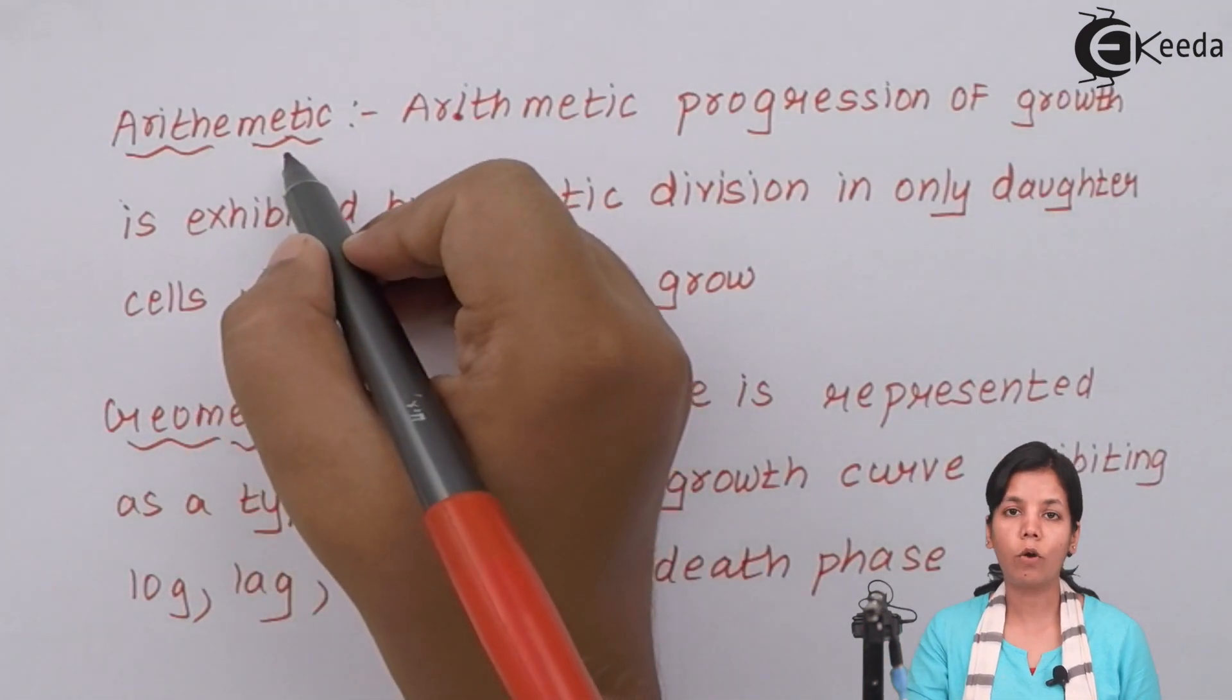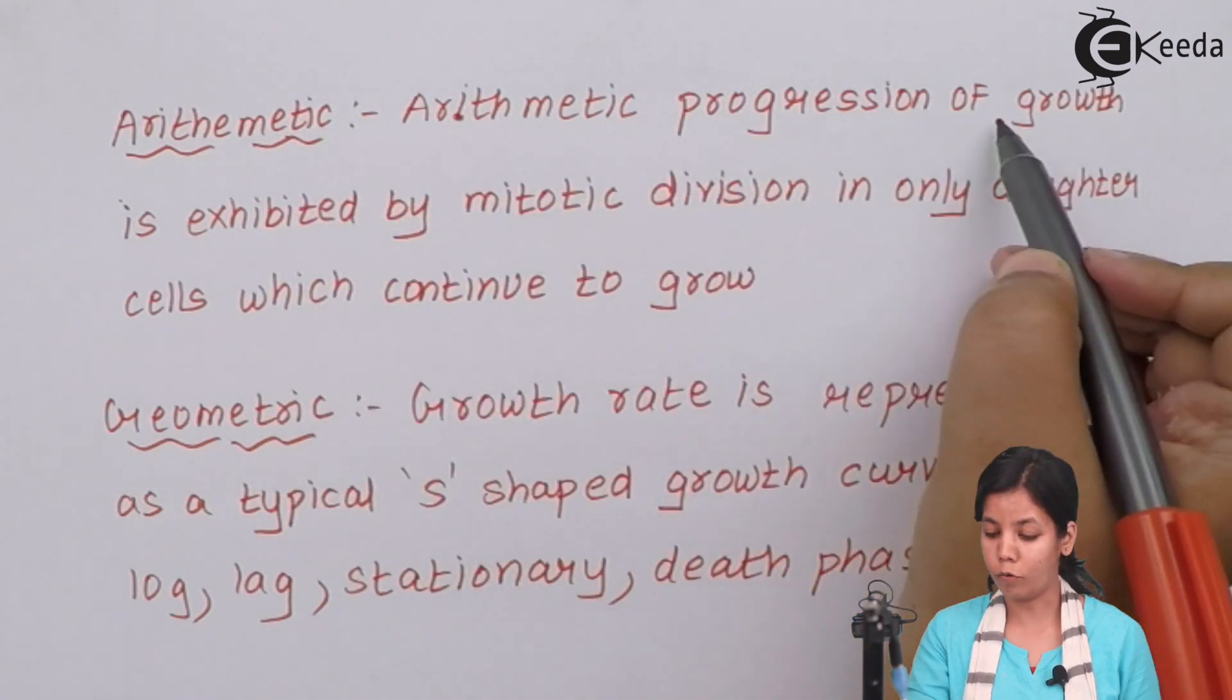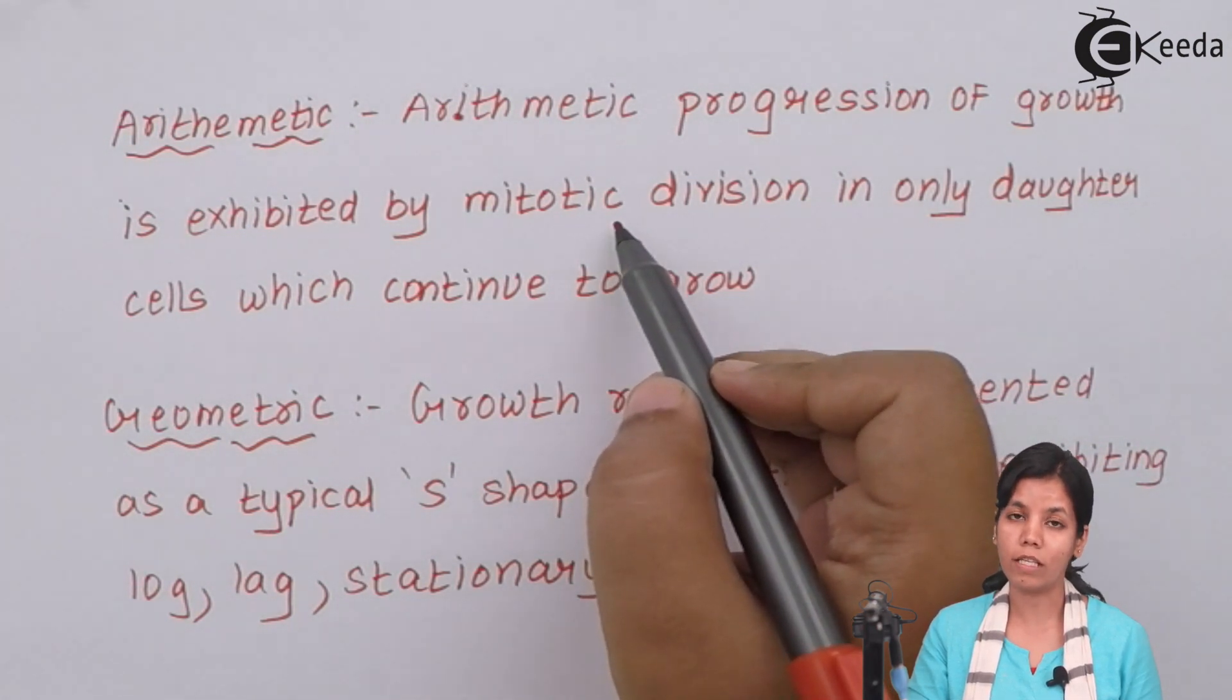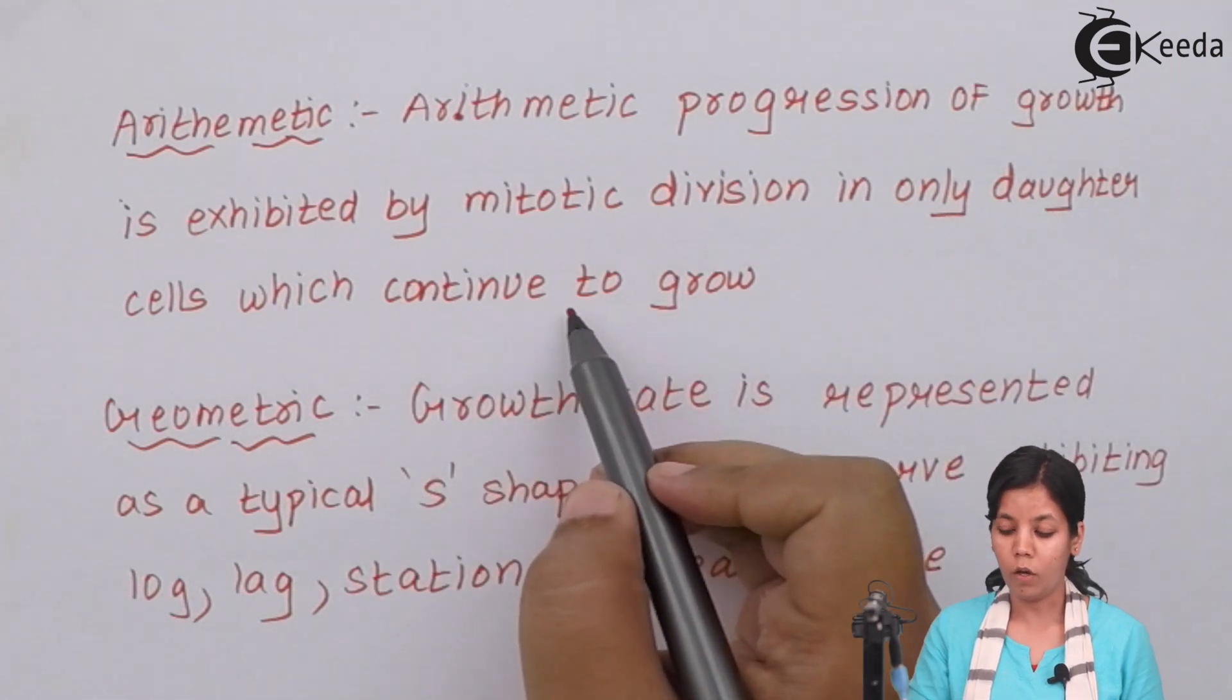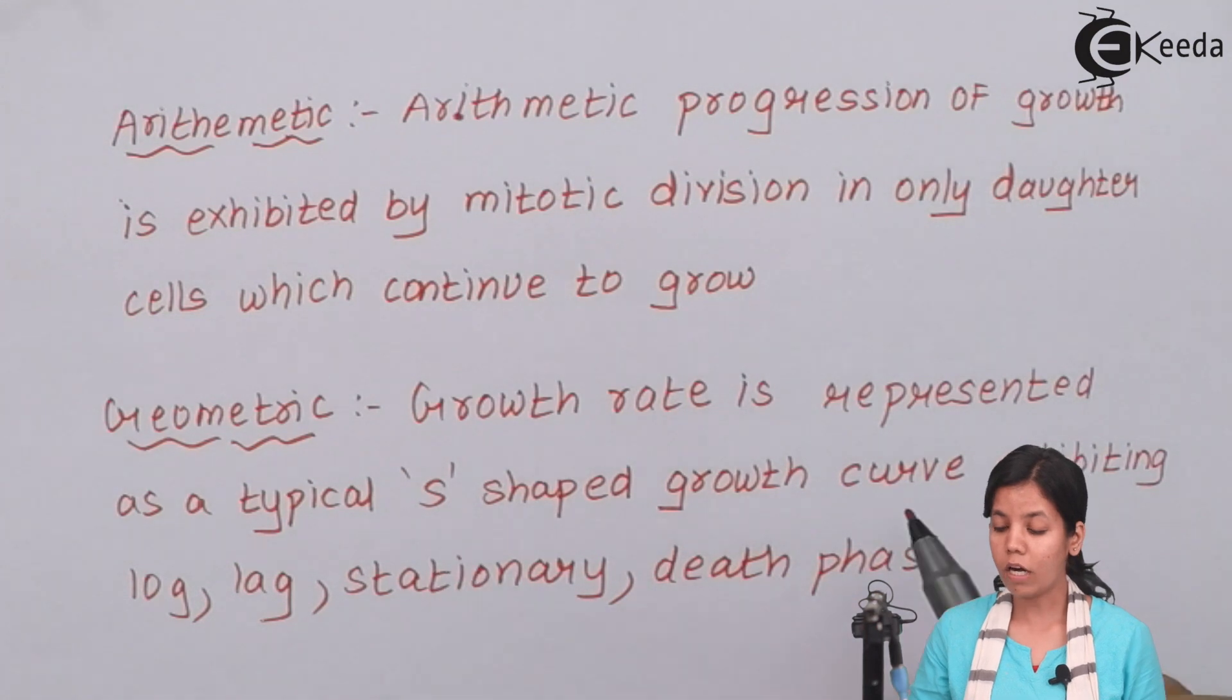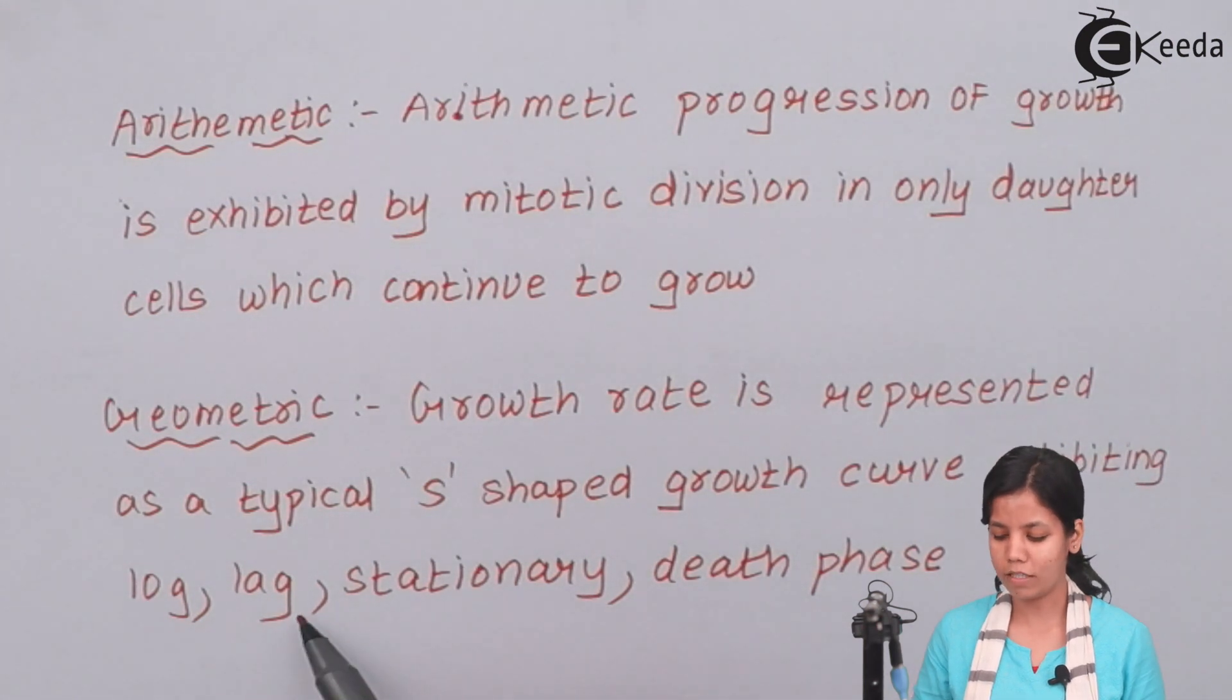The two phases of growth rate are: arithmetic progression of growth is exhibited by mitotic division or somatic cell division or you can say equational division in only daughter cells which continue to grow, whereas geometric growth rate is represented by typical S-shape curve or S-shape growth curve exhibiting four different phases: lag phase, log phase, stationary phase and the death phase.